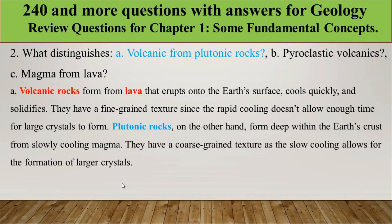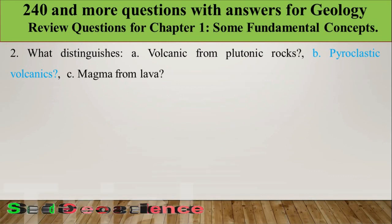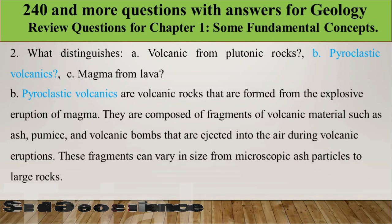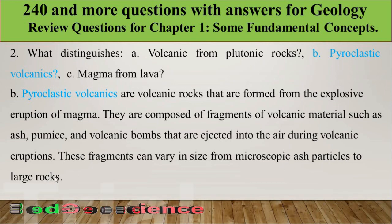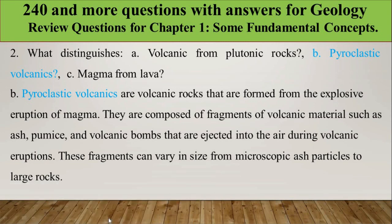Pyroclastic volcanics are volcanic rocks formed from explosive eruptions of magma. They are composed of fragments of volcanic material such as ash, pumice, and volcanic bombs that are ejected into the air during eruption. These fragments can vary in size from microscopic ash particles to large rocks called volcanic bombs.